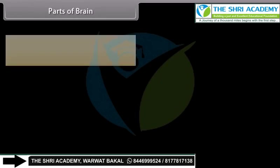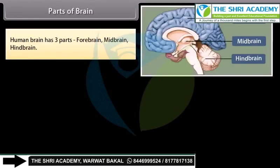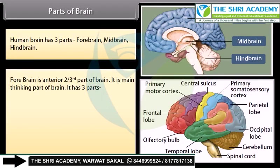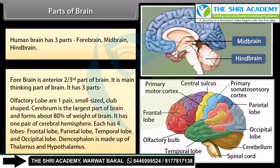The human brain has three parts: forebrain, midbrain, and hindbrain. The forebrain is the anterior two-thirds of the brain and the main thinking part. It has three parts: the olfactory lobes, which are one pair, small-sized, and club-shaped; the cerebrum, which is the largest part of the brain forming about 80% of its weight, having one pair of cerebral hemispheres, each with four lobes — frontal, parietal, temporal, and occipital; and the diencephalon, made of thalamus and hypothalamus.